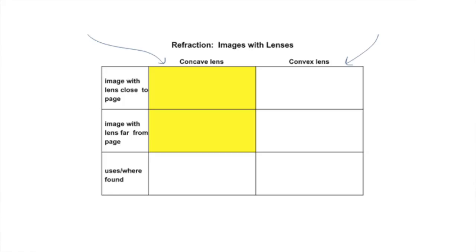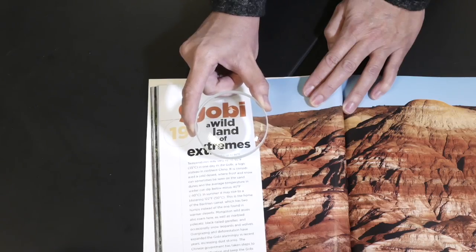Fill in this column as I show you the images through a concave lens. This is a concave lens, first at near.